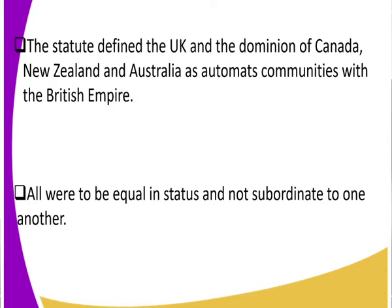The Statute also defined the UK and the dominions of Canada, New Zealand, Australia, and others as autonomous communities within the British Empire. Finally, all were to be equal in status and not subordinate to one another — so all members of the Commonwealth are equal, and none is subordinate to another.